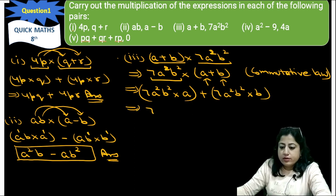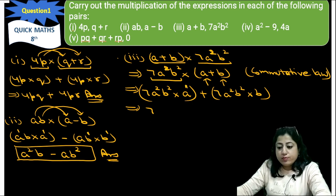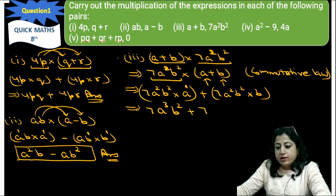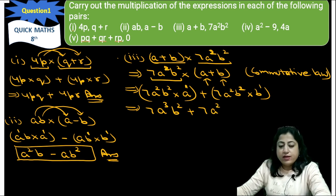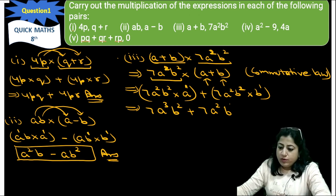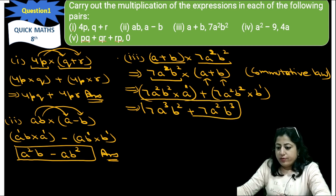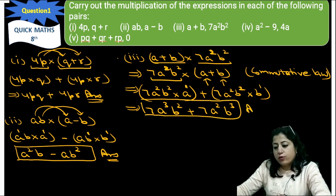So it will be 7: a raised to power 1 is being multiplied with a raised to power 2, so power gets added — 1 + 2 = 3 — giving 7a³b². Plus 7: b² is multiplied with b raised to power 1, so a² stays as is and b powers add — 2 + 1 = 3 — giving 7a²b³. So this is the required algebraic expression, which is a binomial.